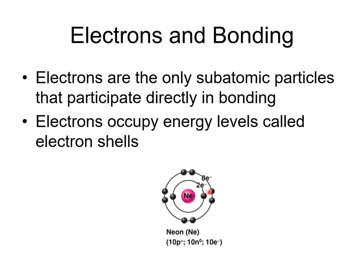Electrons are found outside of the nucleus. In this example we're looking at neon, which has an atomic number of 10, so it has 10 protons. Atoms are electrically neutral, so if they have 10 protons, they also have 10 electrons. These electrons are found in specific areas of space outside the nucleus called energy levels or electron shells. The first energy level contains two electrons, and the second energy level of neon contains eight electrons.